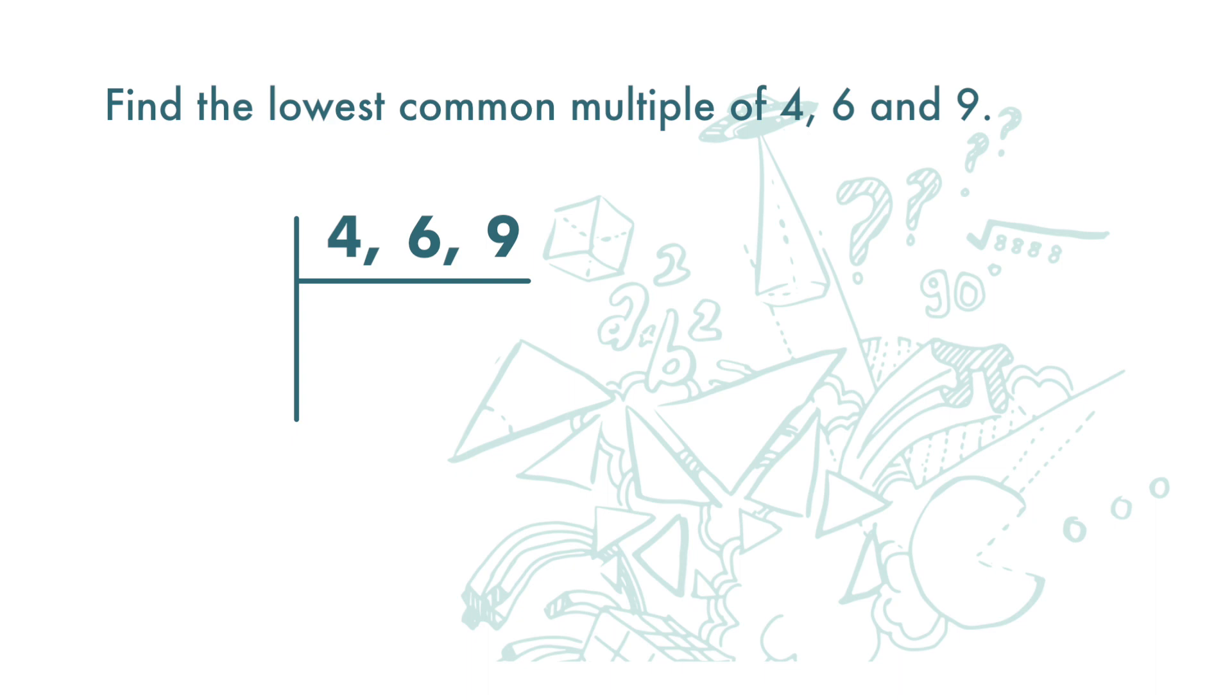Let's use 2 to start: 4 divided by 2 is 2, 6 divided by 2 is 3. We do nothing to 9; it is maintained. Next, 3 divided by 3 is 1, 9 divided by 3 is 3. We do nothing to the 2.